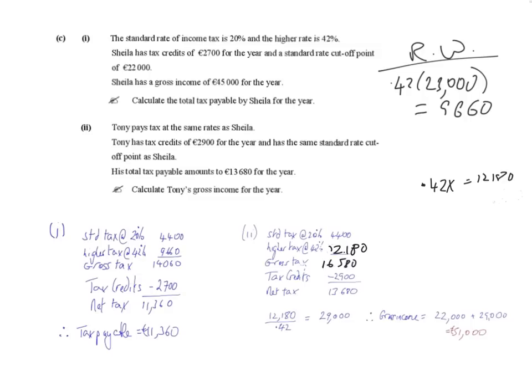And that answers part two of this question. So remember, the key things to remember are: work your way backwards until you find the higher tax, then divide by the rate of tax 0.42, which will give you the difference between the gross income and the standard cutoff point. And then all you have to do is add that amount onto the standard cutoff point to get your gross income.